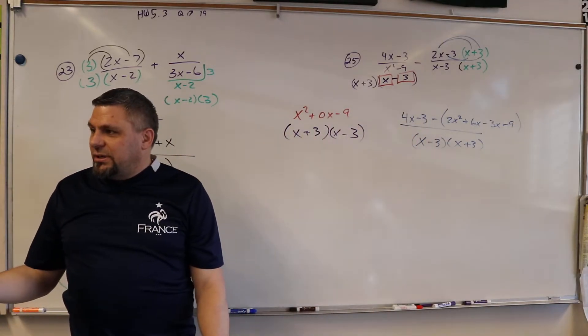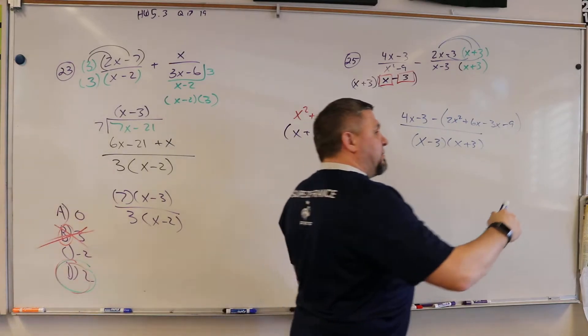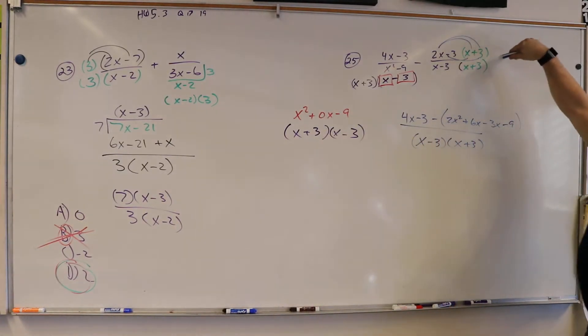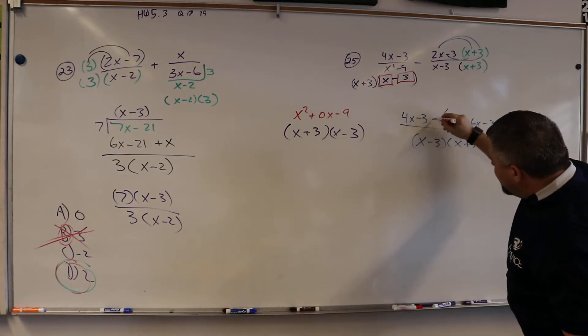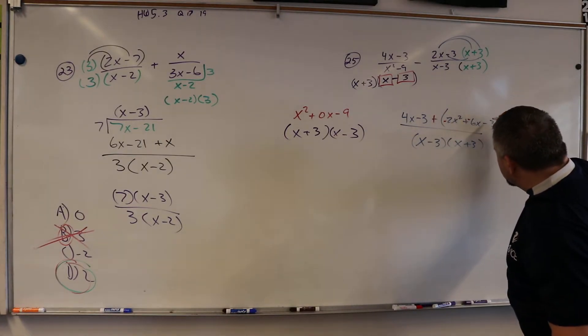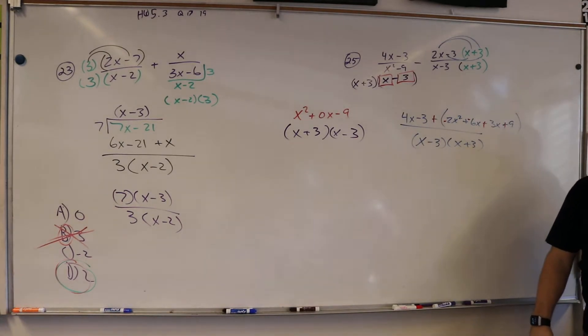You see how we did all that, right? Everybody on the block gets a paper. And then I have to change all their signs, right? Because this is negative. So I go plus, minus, minus, plus, plus, right?